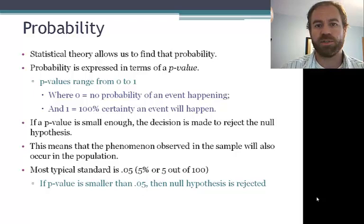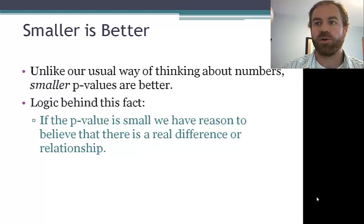.05 for the p-value is sort of an industry standard that's followed in psychology. We want a low p-value to show that there is a difference or a relationship. Unlike maybe some other areas where we're looking for larger numbers, with p-value we want as small a number as possible. The logic behind that is that if the p-value is small, we have reason to believe that there is a real relationship.